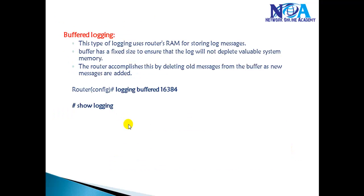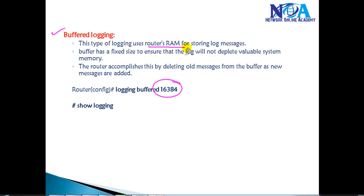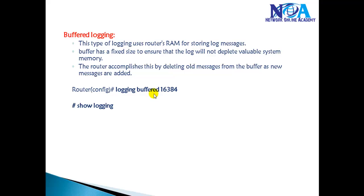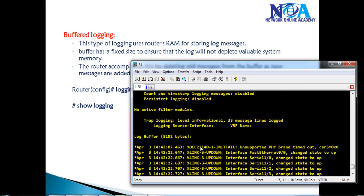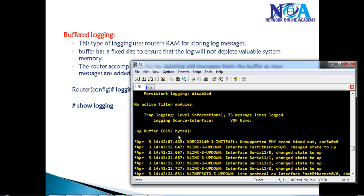By default, log messages are stored in the local buffer memory and we can change the buffer size. This is called buffer logging — the router uses its own RAM to store log messages. These messages are lost if you power off the router, so it's not permanent storage. If the buffer limit is exceeded, older log messages are deleted. The default buffer size is 8192 bytes.